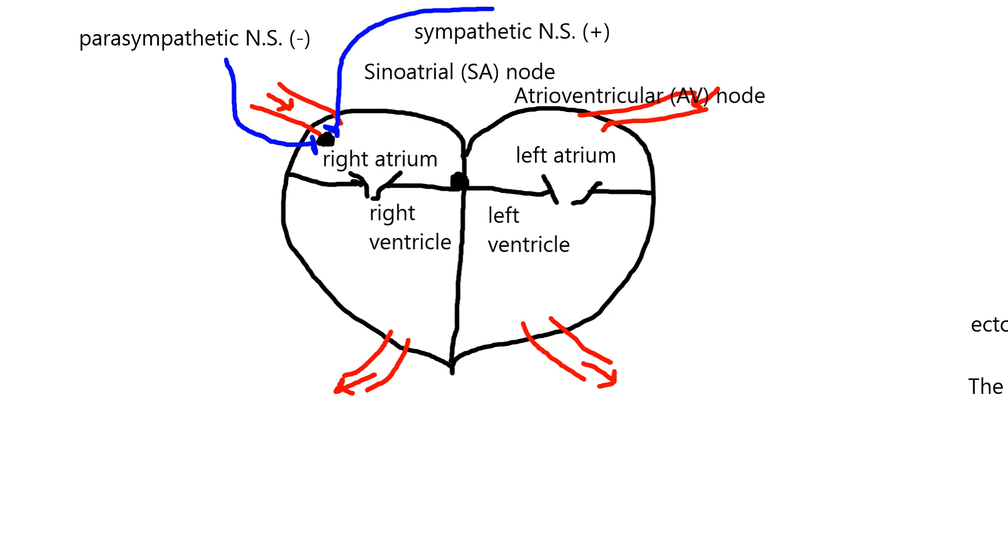So the kicker is the parasympathetic is always on a little bit. And so it's automatically having a little break, which means slowing down the heart.